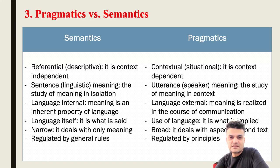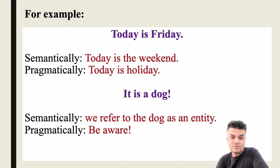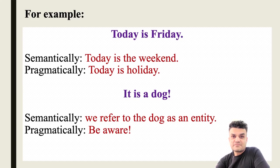These two disciplines are interrelated. For example: 'Today is Friday.' Semantically, Friday is a day that comes after Thursday. Pragmatically, it means today is a holiday — a break or rest for people who work hard. Another example: 'It's a dog.' Semantically, we refer to a dog as an entity or object coming toward us. Pragmatically, it means I am warning a person to be aware of a dog that is coming toward him or her.